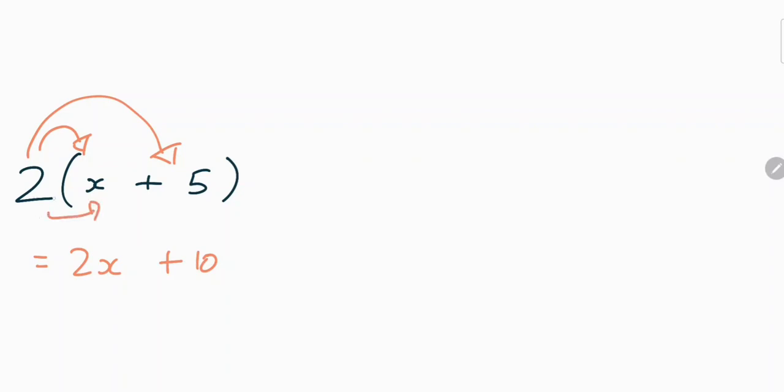You've times the first number, the number outside, by the first letter, and then you've times the number by the last number.